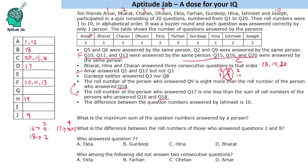We have now used most of the given statements. Question 9 and question 18 have both been resolved. Let us now look at the remaining statement: the difference between the question numbers answered by Ishmith is 10.